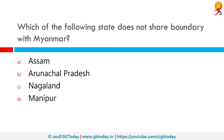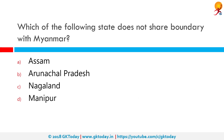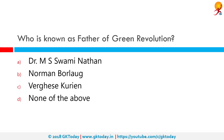Which of the following states does not share a boundary with Myanmar? As you can see on the map, the states Arunachal Pradesh, Nagaland, Manipur, and Mizoram share their borders with Myanmar. So the only option left is option A: Assam.